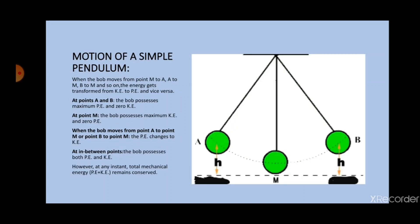The next example of energy conversion is the motion of a simple pendulum. A simple pendulum has a small but heavy mass known as a bob. The bob is tied to a thread whose other end is tied to a rigid support. When the pendulum is not moving, it is termed as being at rest, or its position is known as the mean position. When the bob is displaced a little bit on either side, say at point A or B, those positions are known as extreme positions.